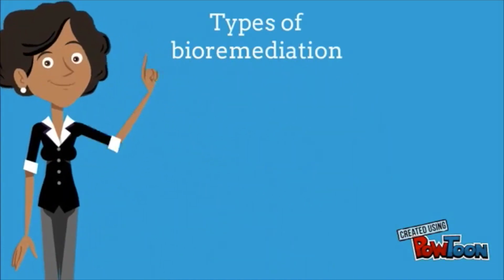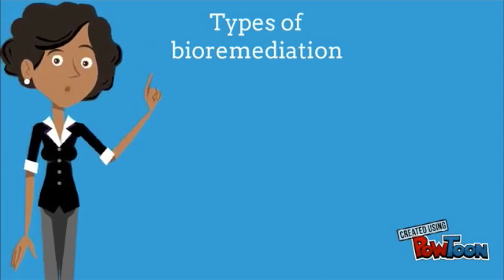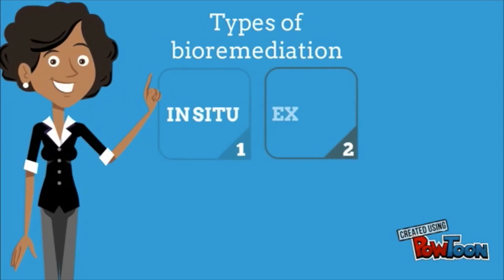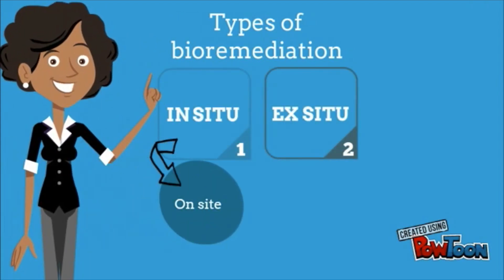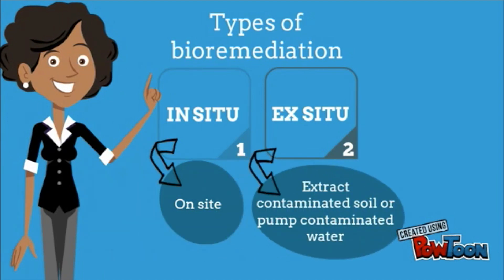In bioremediation, we have two types of treatments: in situ and ex situ. In situ means that we remediate the pollutants on site. Ex situ, on the other hand, means that we extract the contaminated material or pump out the contaminated water from the location at which it was found and take it somewhere else for bioremediation.